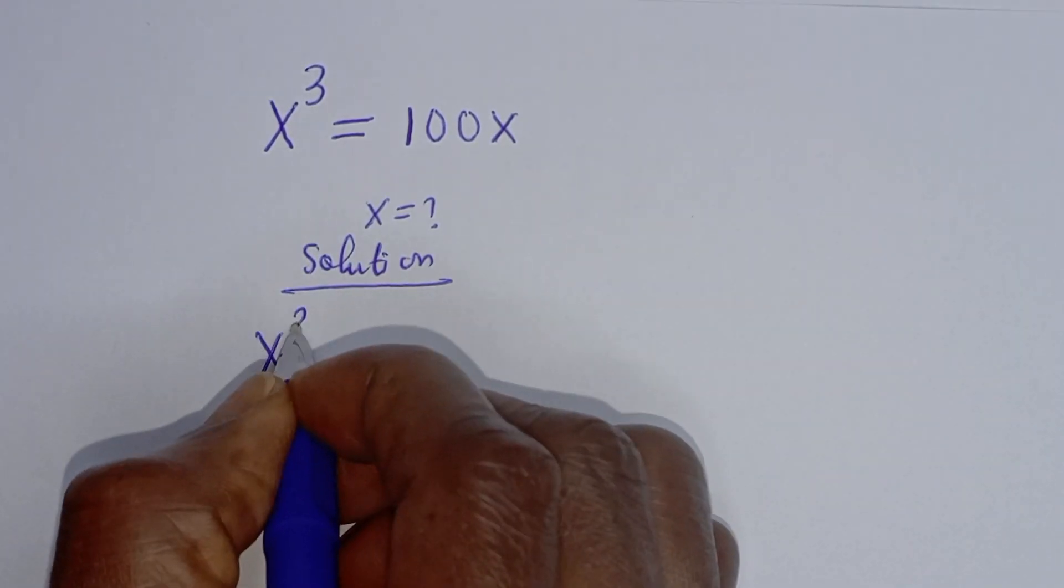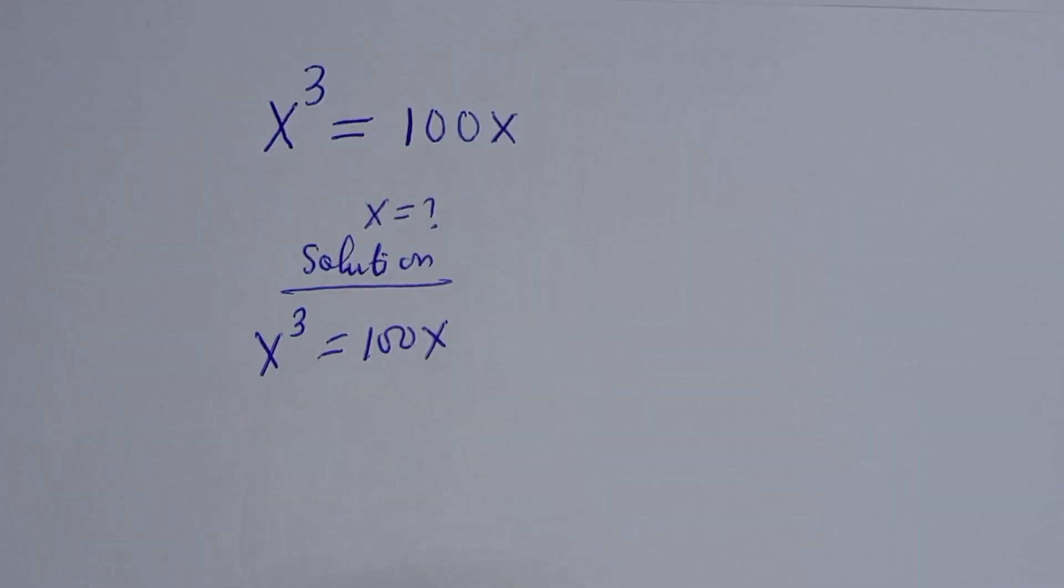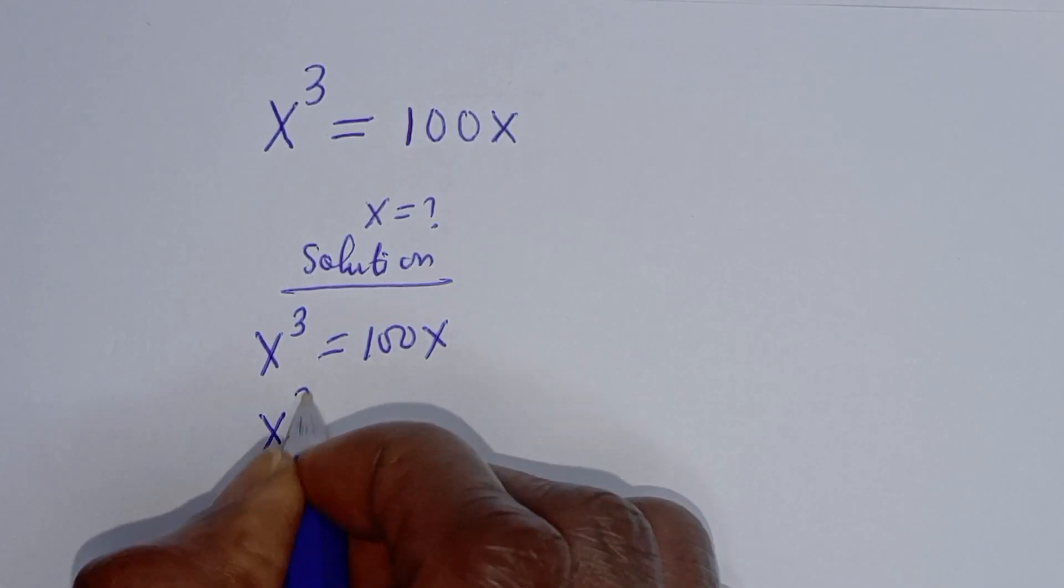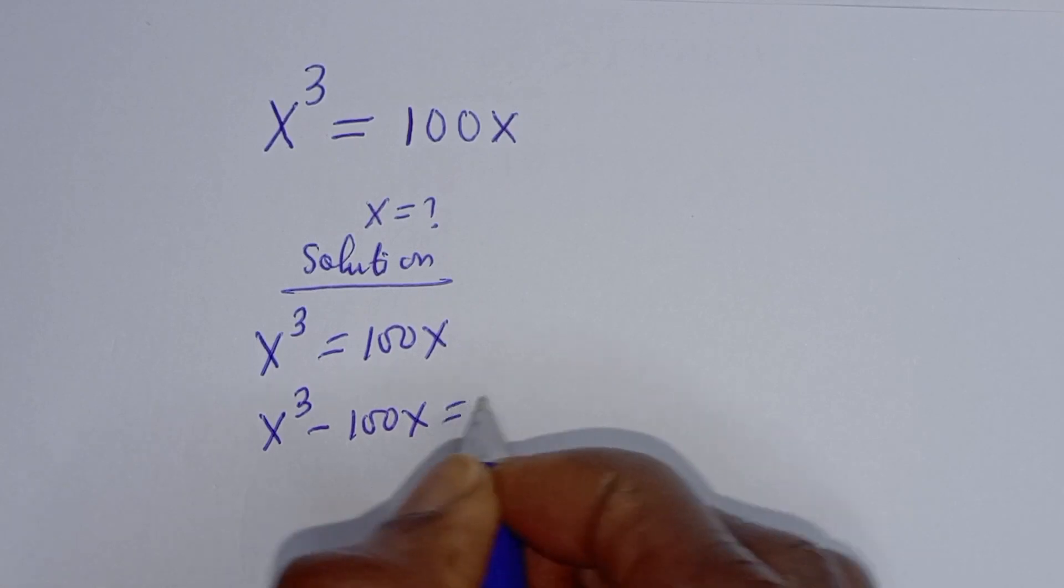Here is x raised to power 3 is equal to 100x. Now let's take this 100x to this side. We have x raised to power 3 minus 100x is equal to 0.